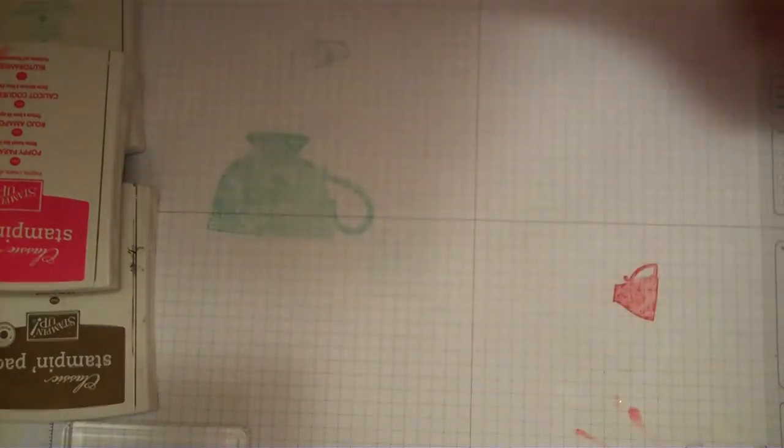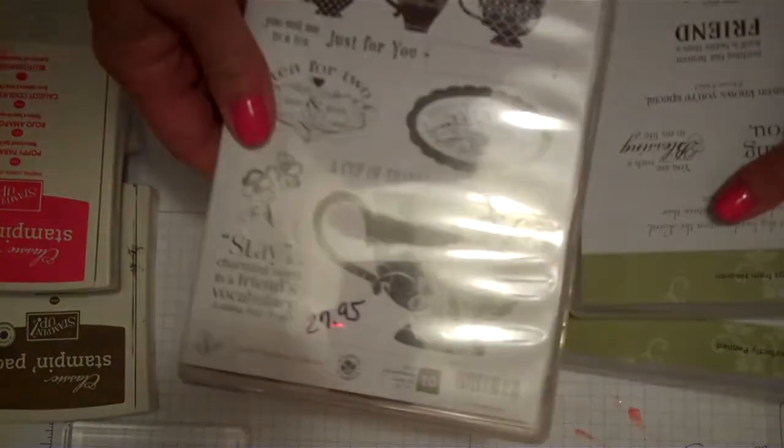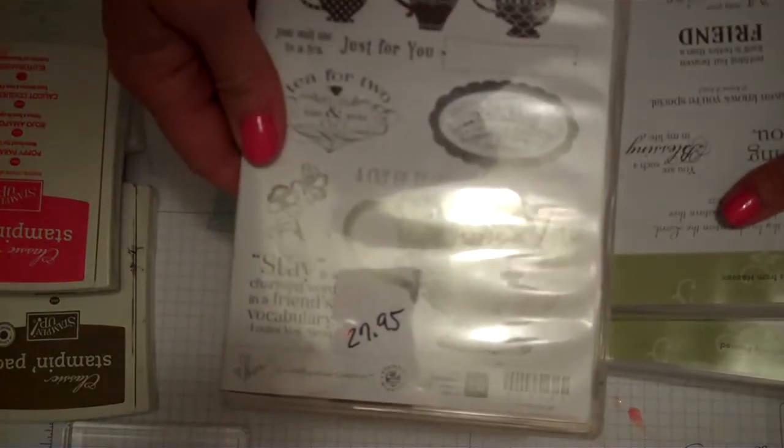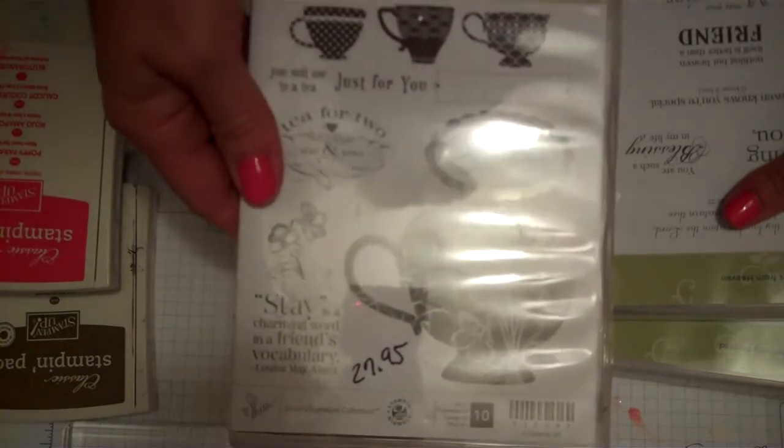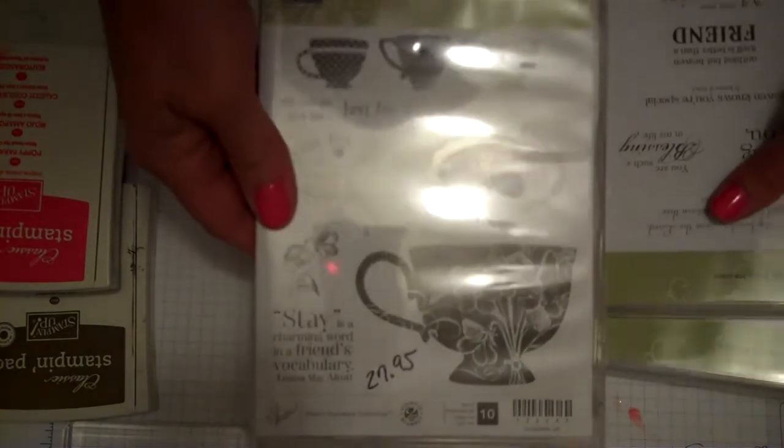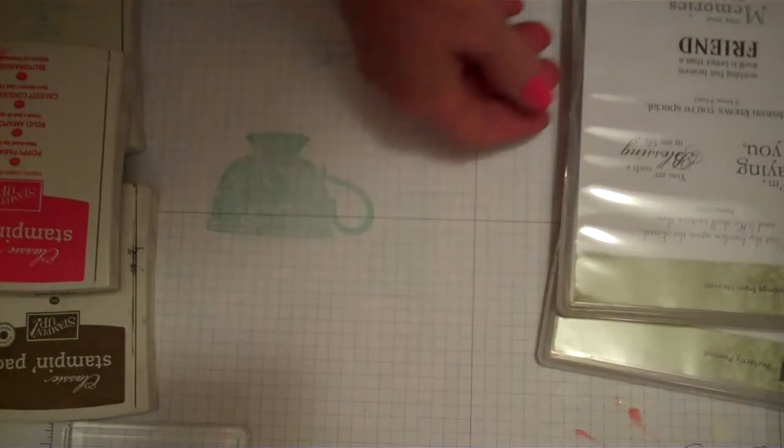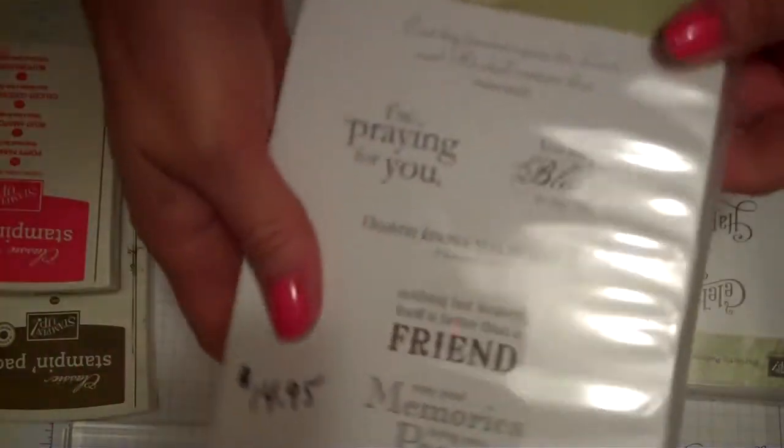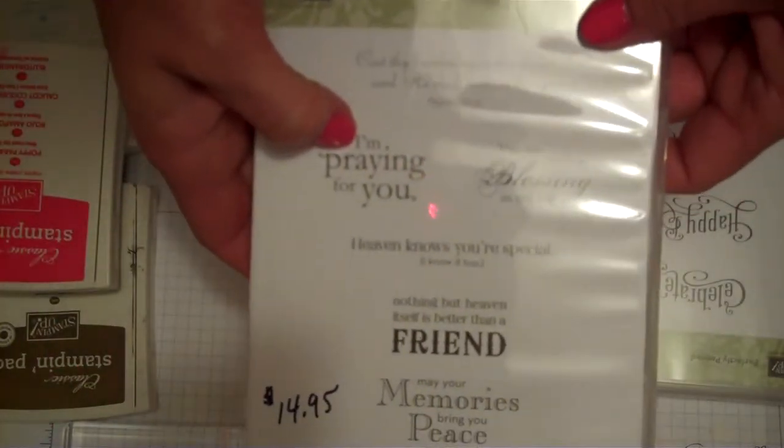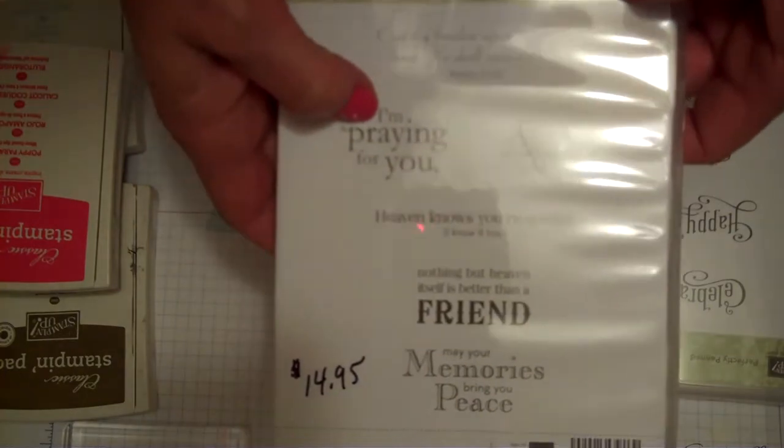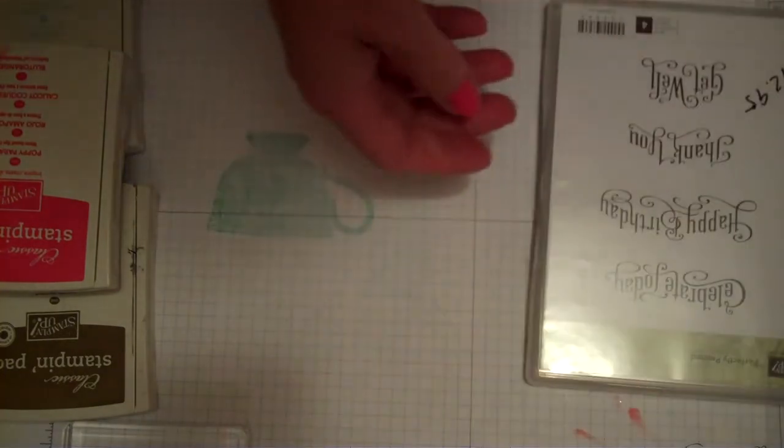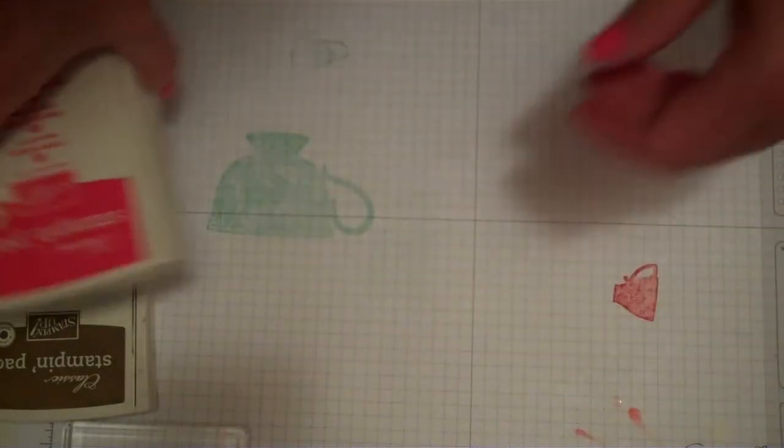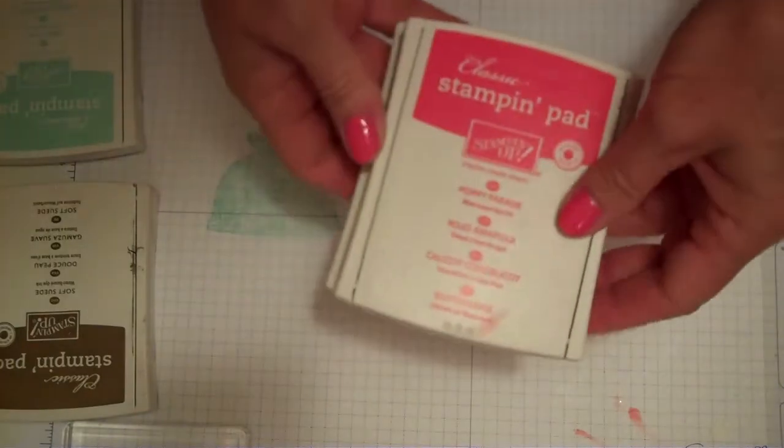Let's go through the supply list. I use several stamp sets. This one's $27.95 and it is the tea shop, really cute. Then I'm going to use the I'm praying for you on the inside, so this is blessings from heaven $14.95, and then perfectly penned. I used the get well out of this, $12.95.